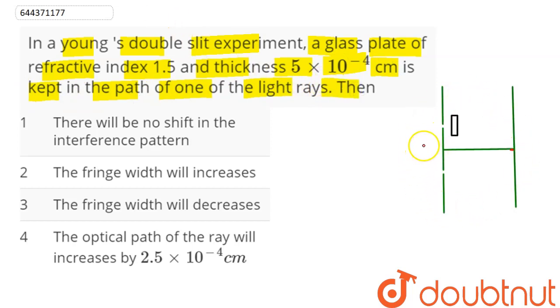We have this as Young's double slit experiment and this here is our glass plate of thickness T and refractive index mu. So, thickness is given as 5 into 10 power minus 4 centimeter and refractive index as 1.5.